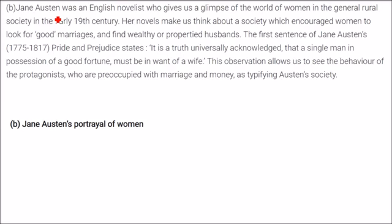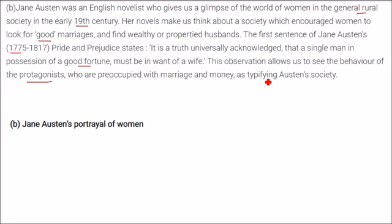Jane Austen was an English novelist who gives us a glimpse of the world of women in genteel rural society in the early 19th century. Her novel makes us think about a society which encouraged women to look for good marriages and find wealthy, propertied men. Jane Austen lived from 1775 to 1817. The first sentence of Pride and Prejudice states that 'a single man in possession of a good fortune must be in want of a wife.' This observation allows us to see the behavior of protagonists preoccupied with marriage and money as typifying Austen's society.